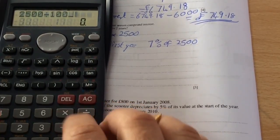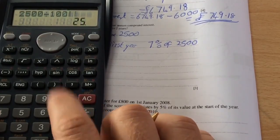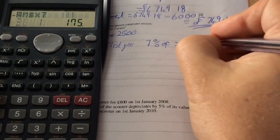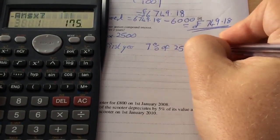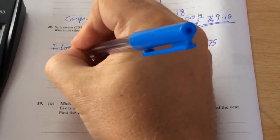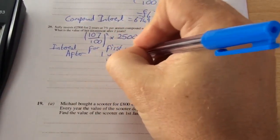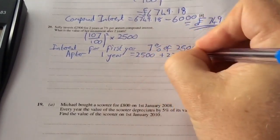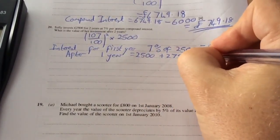One percent would be £2500 divided by 100, which is £25, multiplied by seven. So the first year your interest is £175. So after one year, we had £2500 to start, plus the £175.